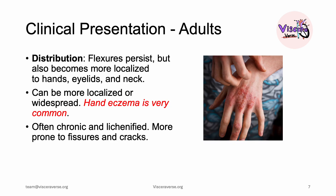In teenagers and adults, the flexural pattern often continues, but we also see a lot of localized eczema — localized to the hands, eyelids, or neck. Hand eczema is very common and can be occupational in many cases. The lesion morphology is chronic and lichenified due to constant itching, and it's more prone to fissures and cracks, which can be very disabling for patients.